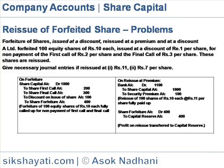On reissue at premium: bank account debit Rs.1100; to share capital account Rs.1000; to security premium account Rs.100. Reissue of 100 shares of Rs.10 each at Rs.11 each fully called up. Share forfeiture account Rs.400 to capital reserve account Rs.400. Profit on reissue transfer to capital reserve.